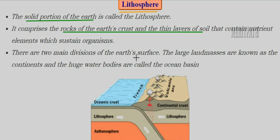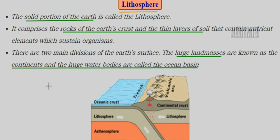There are mainly two major divisions of the earth's surface. The large land part of the earth is known as a continent, and huge water bodies are known as the ocean basin. Inside the earth there is earth's crust made up of rocks, and then there is also soil all over it. So this is totally the lithosphere.